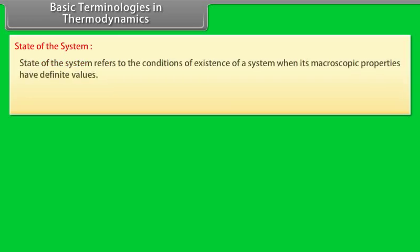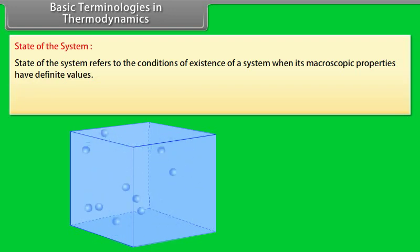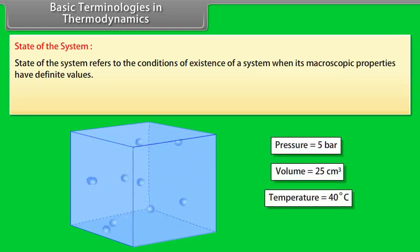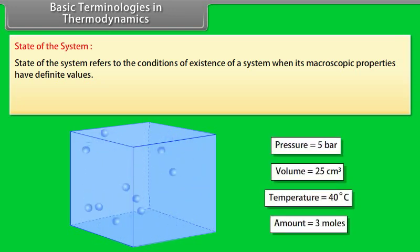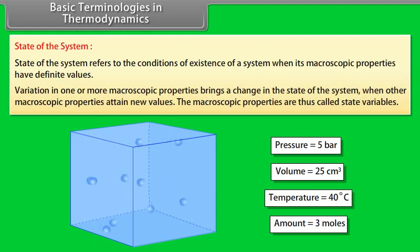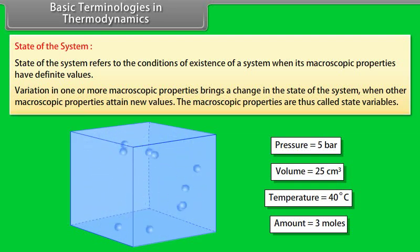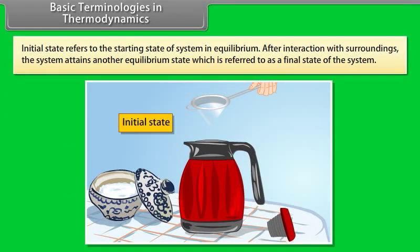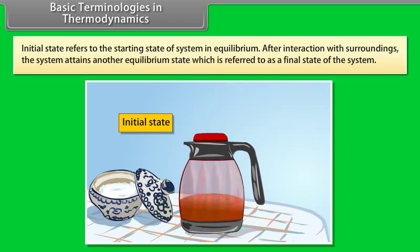State of the system refers to the conditions of existence of a system when its macroscopic properties have definite values. For example, the state of a gaseous system can be defined by its pressure, volume, temperature, and amount. Once these minimum numbers of macroscopic properties are fixed, the other properties automatically acquire definite values. Variation in one or more macroscopic properties brings a change in the state of the system. These macroscopic properties are called state variables. The initial state refers to the starting state of the system in equilibrium; after interaction with surroundings, the system attains a final state.